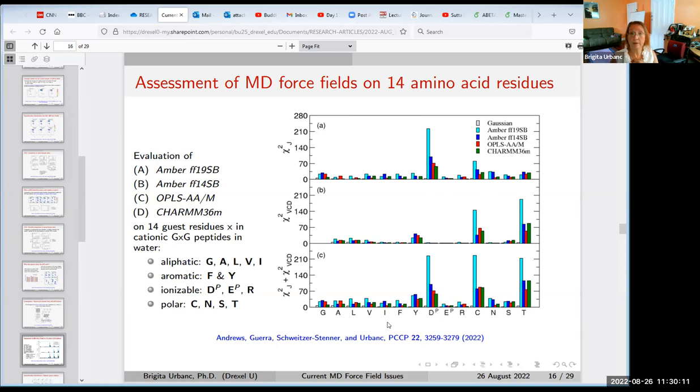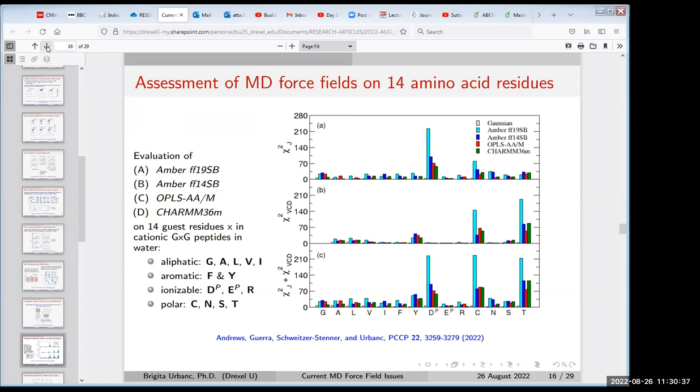For example, isoleucine. It looks like it's well reproduced here, but if you look at the details, you see that the Ramachandran distribution is missing an essential part. Isoleucine specifically likes to populate parallel beta region. And that's not reproduced in any of the molecular dynamics force fields. Brigitte, you have like two minutes. Sorry.